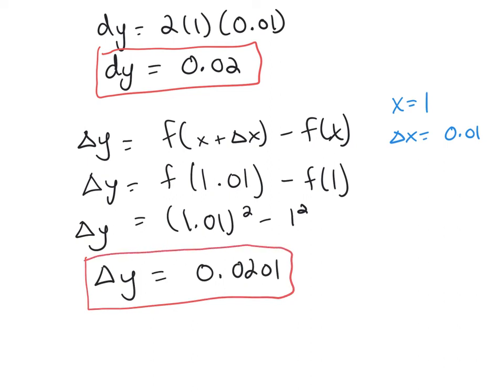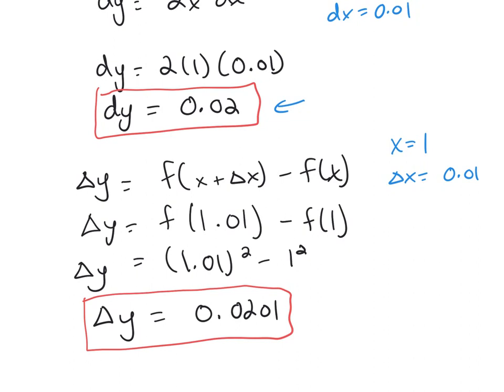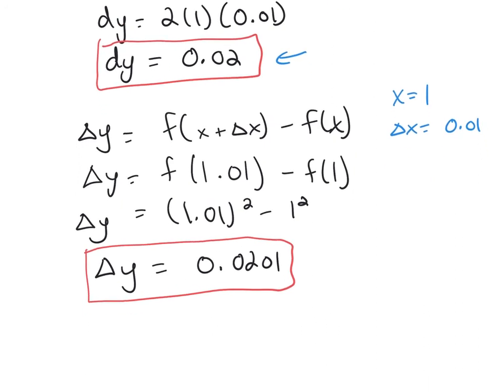So the actual change in my function was 0.0201, and we approximated it with this dy here, 0.02. So you'll see that we were pretty close. We were correct up to two decimal places. Well really three, I guess, up to three decimal places. So it's a pretty good estimate for the change in my function.